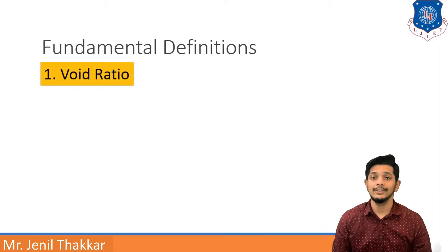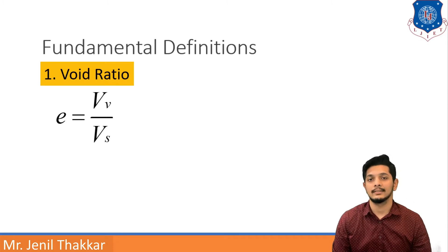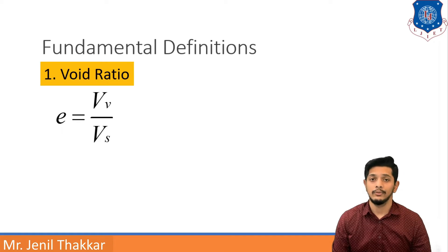The first definition is Void Ratio. Void Ratio is denoted by small e. Its equation is VV upon VS, where VV means Volume of Voids and VS means Volume of Solids. So Void Ratio can be defined as Volume of Voids to Volume of Solids.